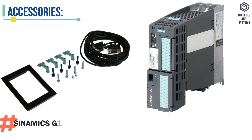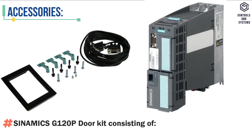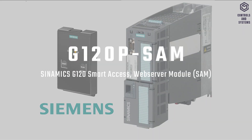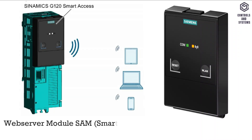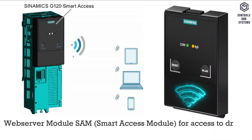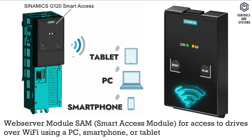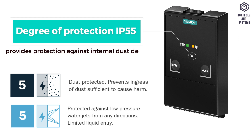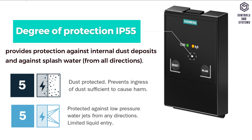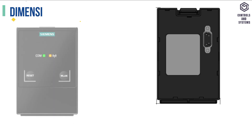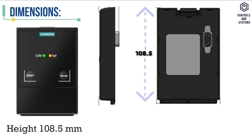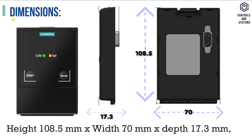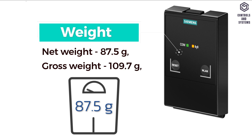Accessories: Sinamix G120P Door Kit consisting of seals, mounting materials, and connection cable. The Web Server Module allows access to drives over Wi-Fi using a PC, smartphone, or tablet. Degree of Protection is IP55, providing protection against internal dust deposits and against splash water. Dimensions: height 108.5mm, width 70mm, depth 17.3mm. Weight is 87.5g.